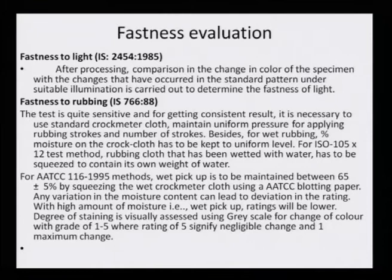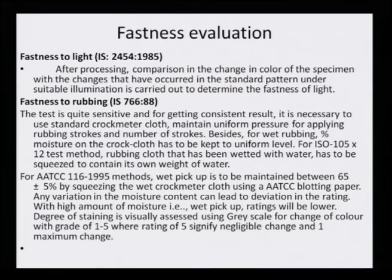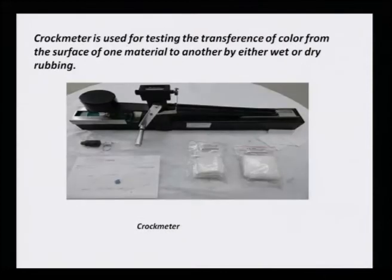Degree of staining is usually assessed using a gray scale. The gray scale ranges from 0 to 5, where rating 5 signifies negligible change and rating 1 or 0 shows maximum change. This is how the croc meter looks — it is used for testing the transference of color from the surface of one material to another by either wet or dry rubbing method.